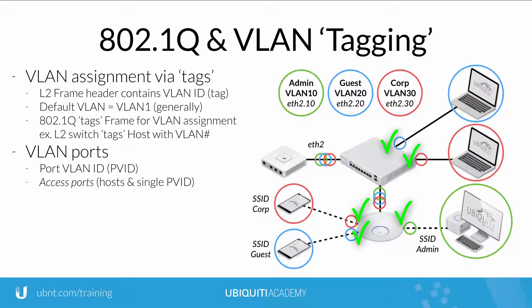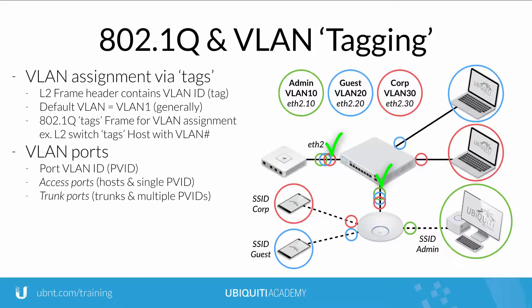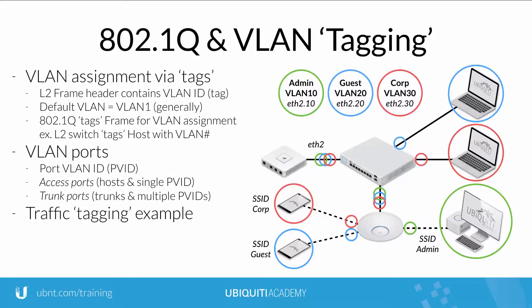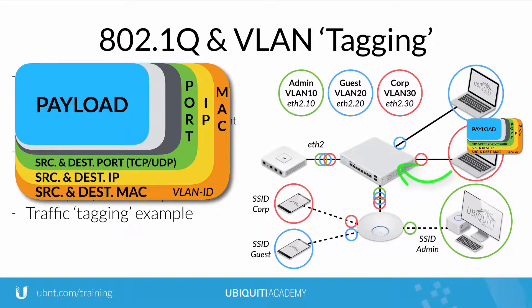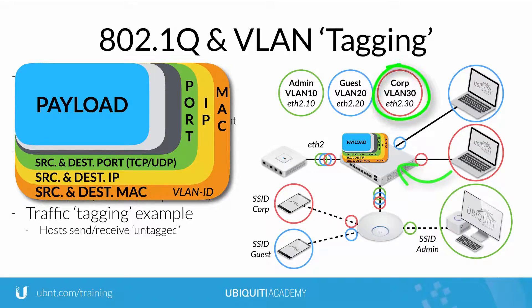Access ports connect to host devices and therefore have a single port VLAN ID. On the other hand, trunk ports connect to other trunk ports of VLAN-ready devices, like switches and access points, and can receive as many port VLAN IDs as are required per the network topology. To help illustrate how VLAN tagging works with traffic, consider the following: a host sends traffic upstream without tags. The untagged traffic reaches the access port, at which point the access port inserts the VLAN ID, or the tag, into the frame header.